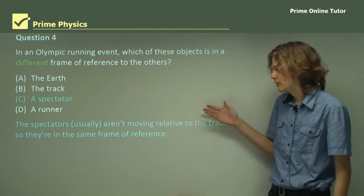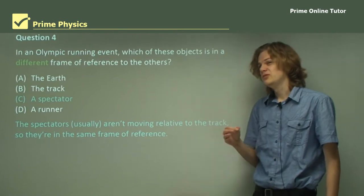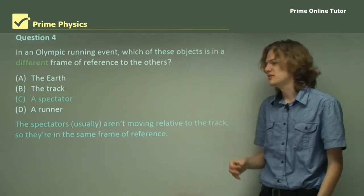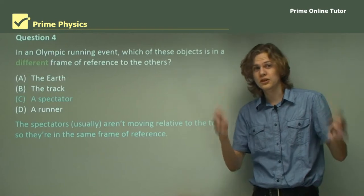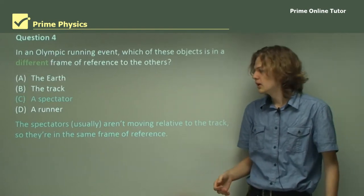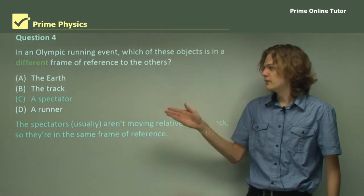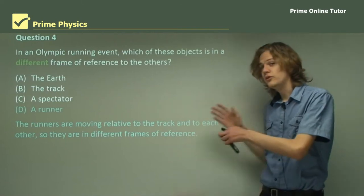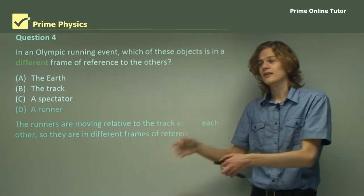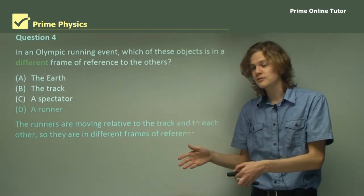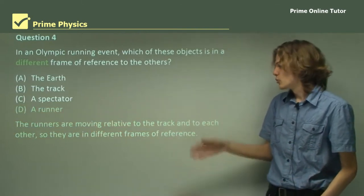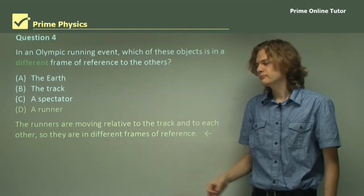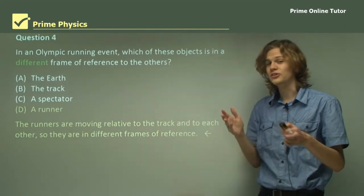A spectator, similarly, isn't really moving relative to the Earth or the track — they're usually just sitting there watching the athlete. And if we look at option D, the runner, the runner is actually moving relative to the track and relative to the Earth and the spectators. So it's the runners that are in different frames of reference, because they're not stationary.